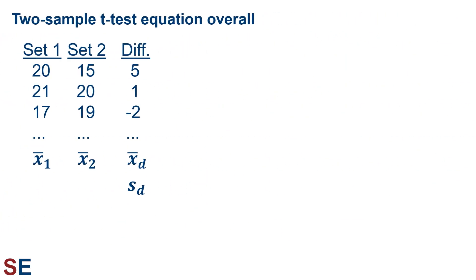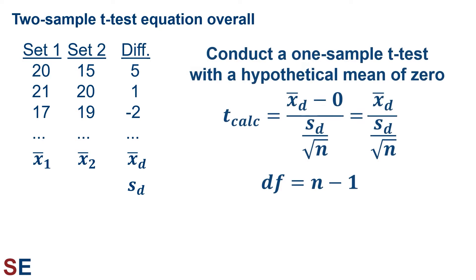In practice, we list the values in each data set and compute the differences for each pair. We calculate the means of all three sets of values and the standard deviation of the differences. The means of the samples allow us to say which is larger or smaller if we get a significant difference. The mean and standard deviation of the differences go into the t-test equation for a one-sample t-test with a hypothetical mean of zero. The t-calculated value is the mean of the differences divided by the standard error — the standard deviation divided by the square root of the sample size. The degrees of freedom is the number of differences minus one.